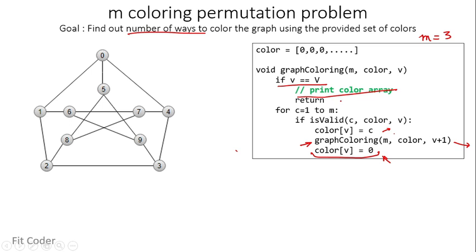Whenever all vertices are colored, we print that array and return. In the backtracking step we reset the color array and explore all valid combinations. In this manner, for a particular graph we find all valid combinations to color the graph. I will explain the details in the code.